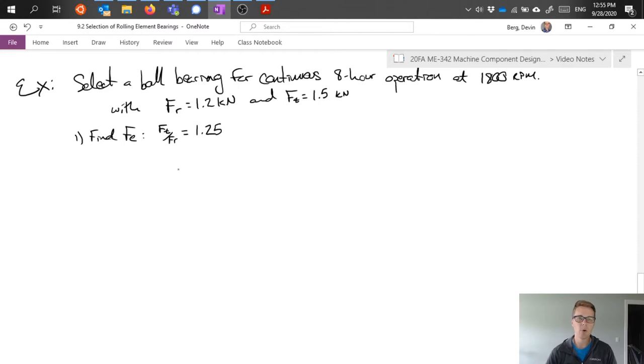That's greater than 0.35, so we need to go ahead and use the equation provided in order to carry out that multiplication. So the equation provided is radial load times 1 plus 1.115 times thrust load over radial load.